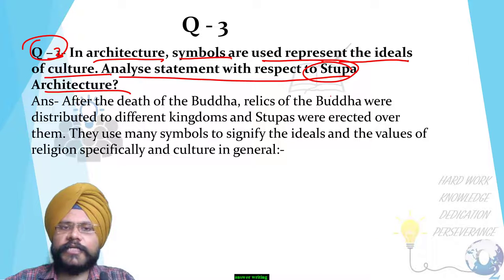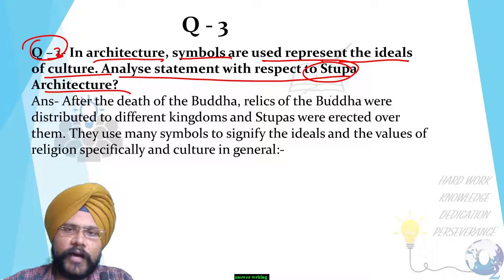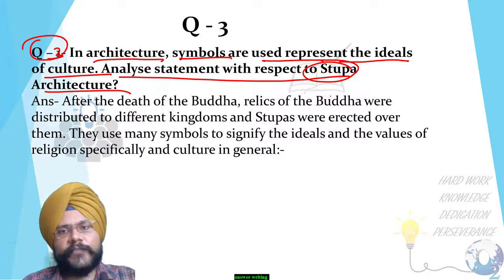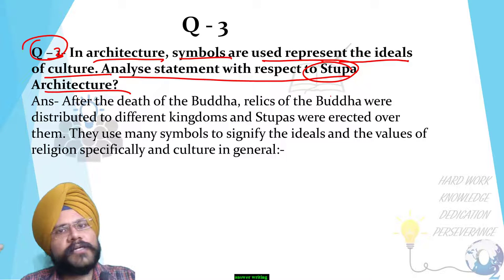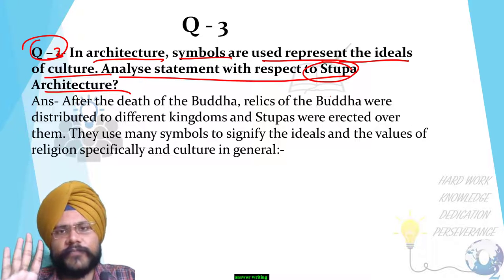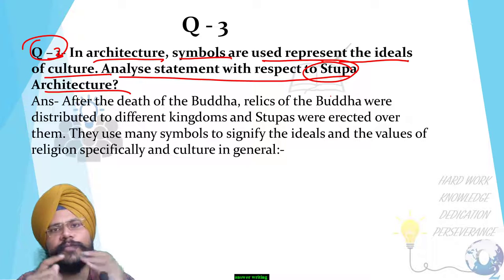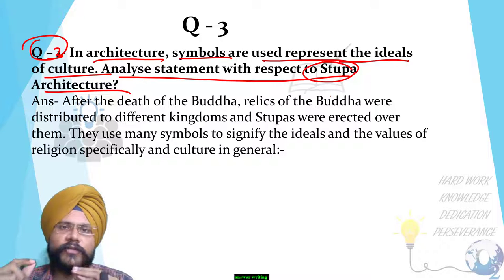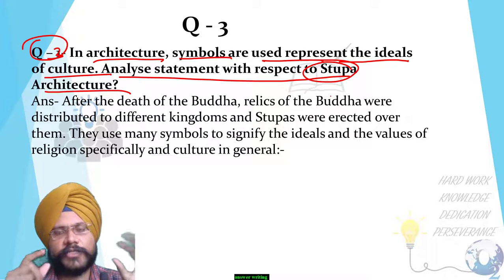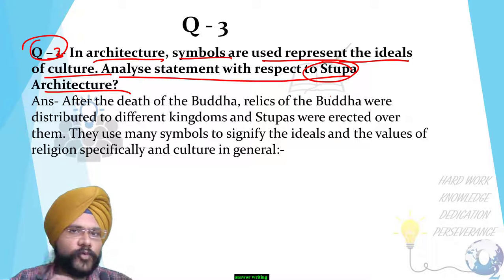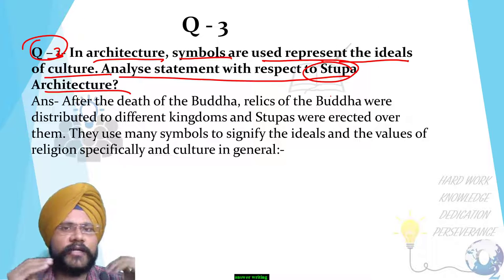You should analyze the statement that in architecture some symbols are used and those symbols are represented by culture. Here there are two keywords: culture and stupa. When you get a question from UPSC, please try to understand the question carefully.